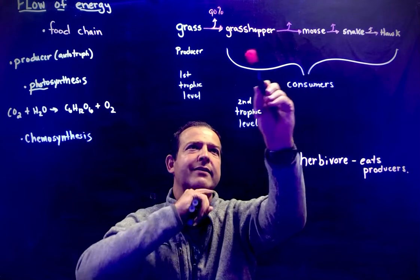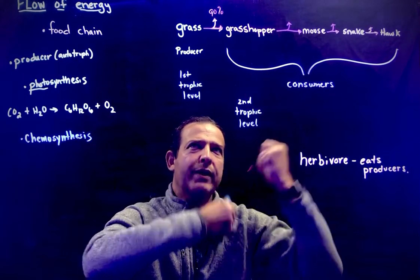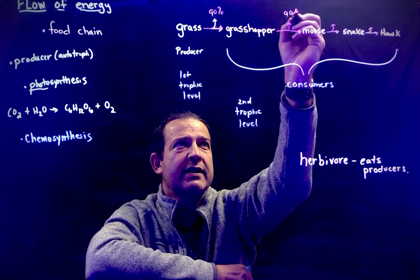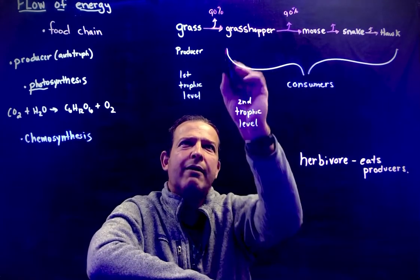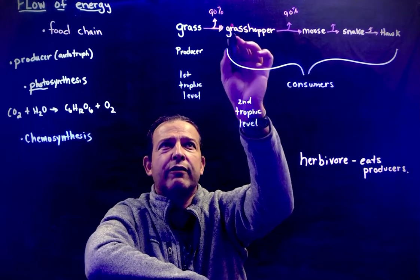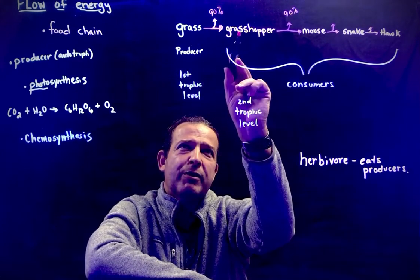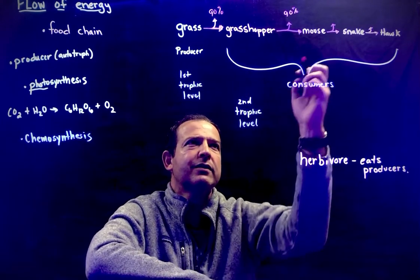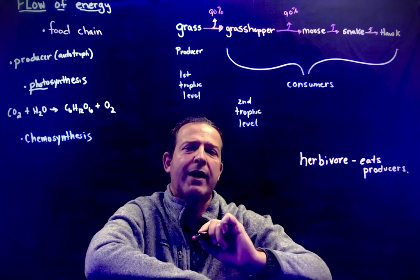Does the mouse get all the energy of the grasshopper? No — it had to go through the digestive processes and getting the food also, so 90% of it is lost as heat. I want to point out: look at the direction the arrow is pointed. The arrow points in the direction that the food or energy went. The grass did not get the energy from the grasshopper — the grasshopper got the energy from the grass. So the mouse is getting 10% of the energy from the grasshopper.